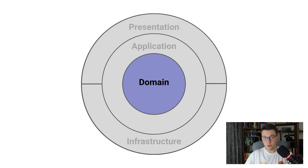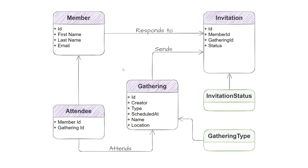I'm going to start from an anemic domain model and show you how we can move into a rich domain model by pushing all of the behavior and the interesting business logic inside of our domain. We are going to build a gathering management system that I very creatively called Gatherly. You can see that we have four entities in purple. The first entity is the member, which is the user of our system. Members can create gatherings to which they can invite other members by sending out an invitation, and when a member responds to an invitation and accepts it, we create a new attendee which represents a way for us to track which members are attending which gathering.